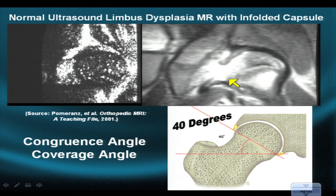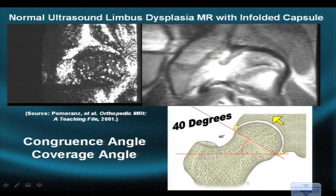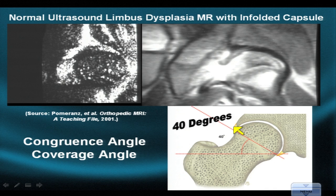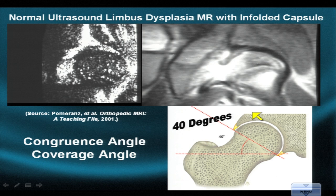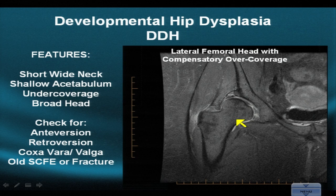MRI provides a lot of useful soft tissue information. One way to assess the conformity, congruence, and coverage of the acetabulum relative to the femur is via the congruence or coverage angle. A horizontal line is drawn perpendicular to the vertical, and a second line is drawn from fibrocartilage rim to fibrocartilage rim. This angle should be about 40 degrees. If the angle is too small there may be over-coverage; if too large, there may be under-coverage.